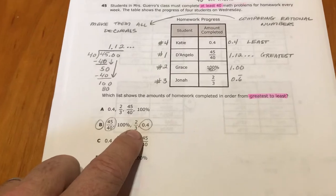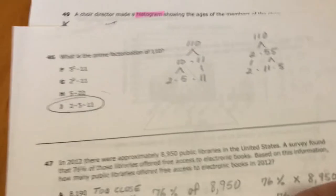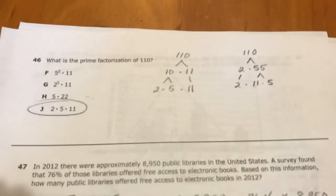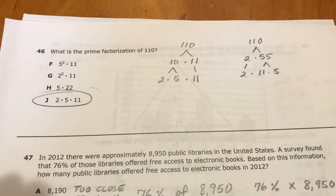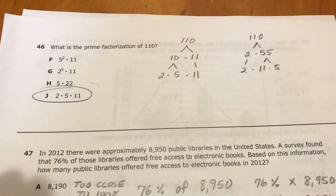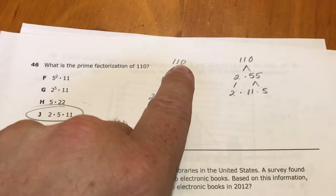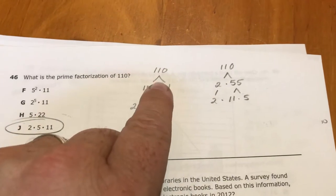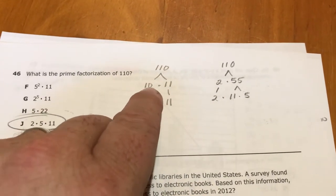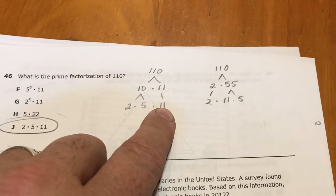All right, 46, prime factorization. You need to know prime numbers. We sang a song about this so we could understand what the prime numbers were: 2, 3, 5, 7, 11, 13, 17, 19, 23, 29. Those are our prime numbers. So we're going to factor the number 110 until we get all prime numbers at the bottom. There's a lot of ways you can do this.